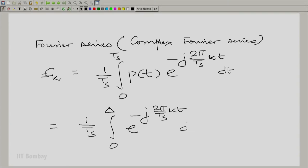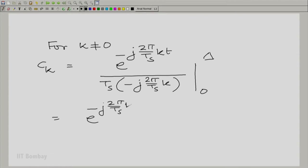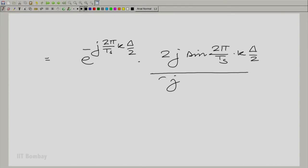It is very easy to write down. Of course, this holds except for k equal to 0. We will write a separate expression for k equal to 0. Let us simplify this. We can strike off the two j's from the numerator and denominator. We can strike off the two here and we can divide and multiply by t_s in the denominator.